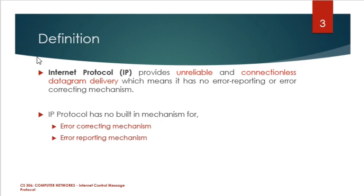Internet Protocol provides an unreliable and connectionless datagram delivery, which means it has no error reporting or error correcting mechanism. The network layer, or internet layer, provides this protocol. IP is absolutely unreliable and connectionless as a datagram protocol.